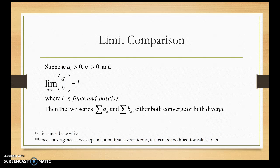The next test is the limit comparison test. Again, both series are positive. Now I take the ratio of the limits of the nth terms of each sequence. If that ratio is a finite and positive limit, then those two series will either both converge or both diverge.